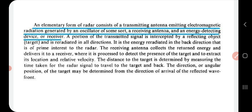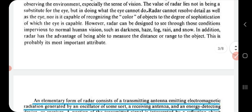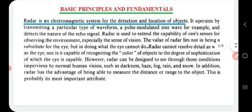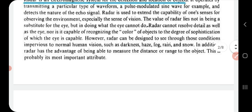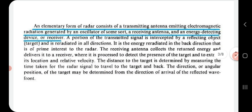The distance to the target is determined by measuring the time taken for the radar signal to travel to the target and back. The direction or angular position of the target is determined from the direction of arrival of the reflected wave front. The usual method of measuring the direction of arrival is with narrow antenna beams.